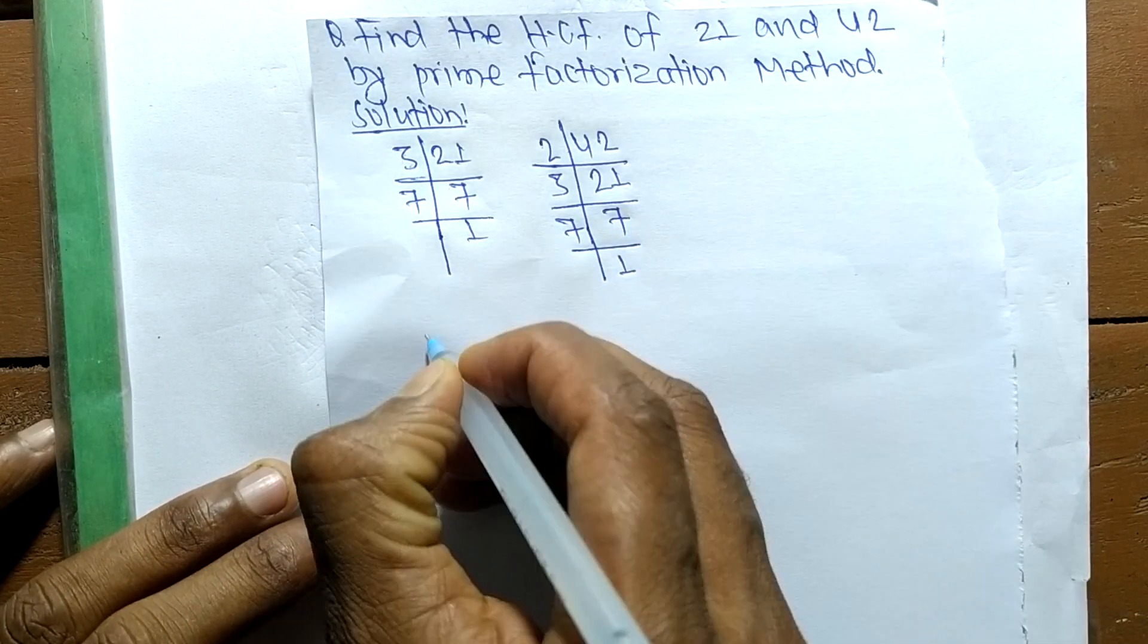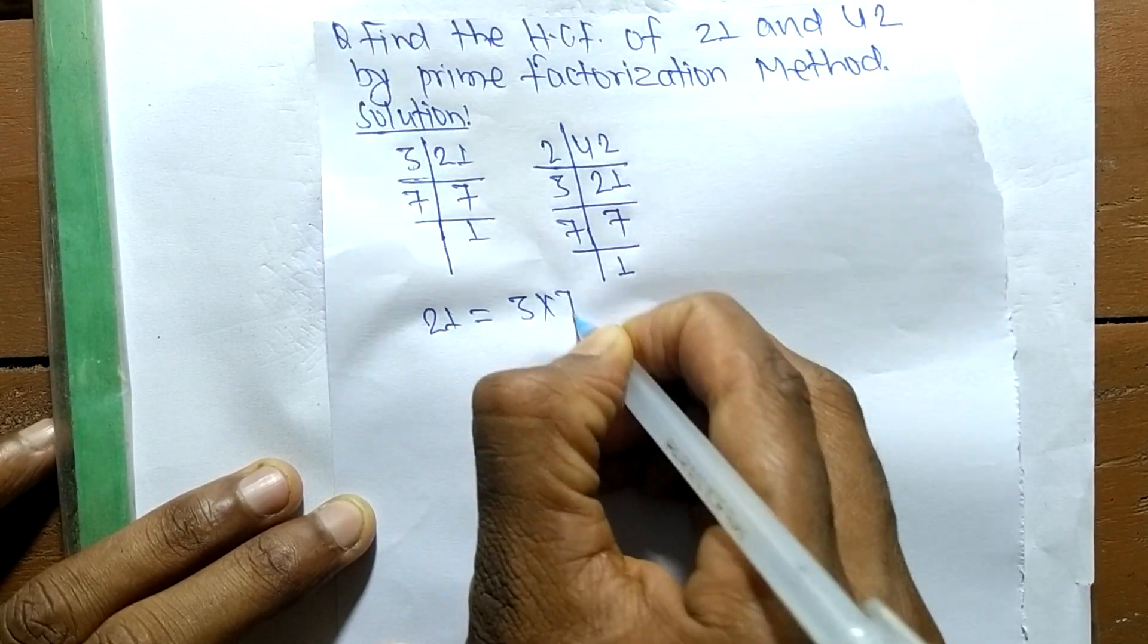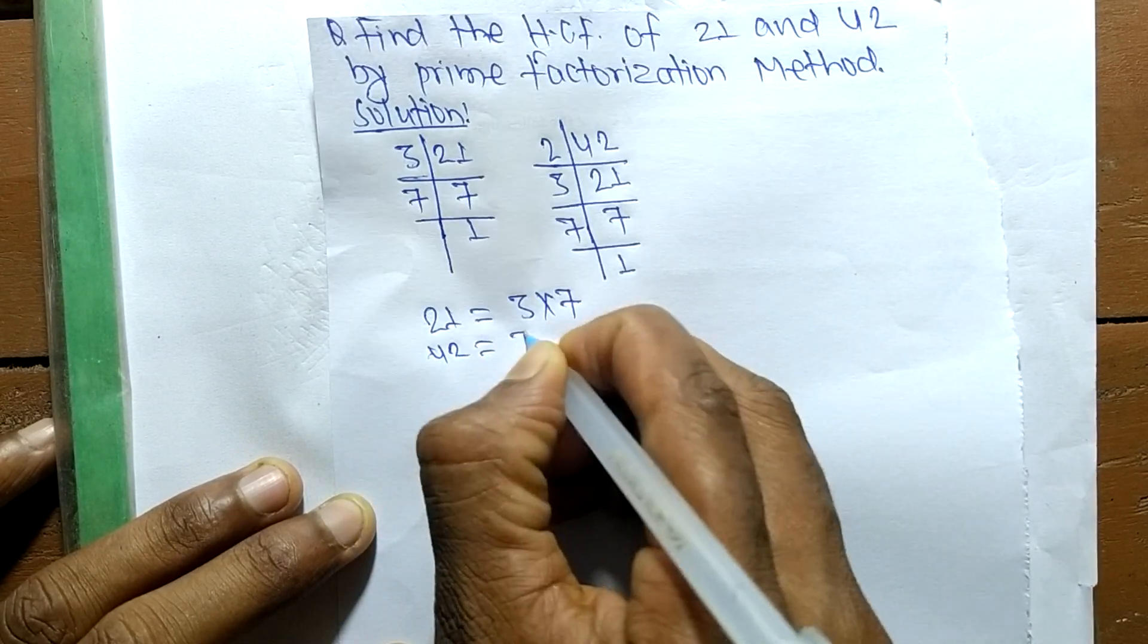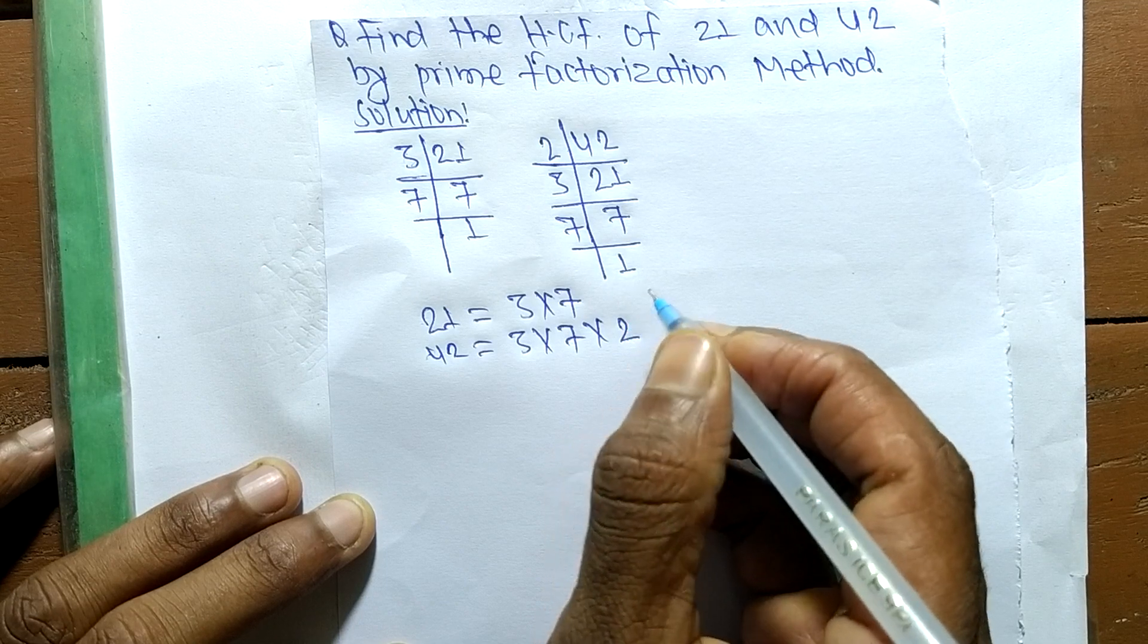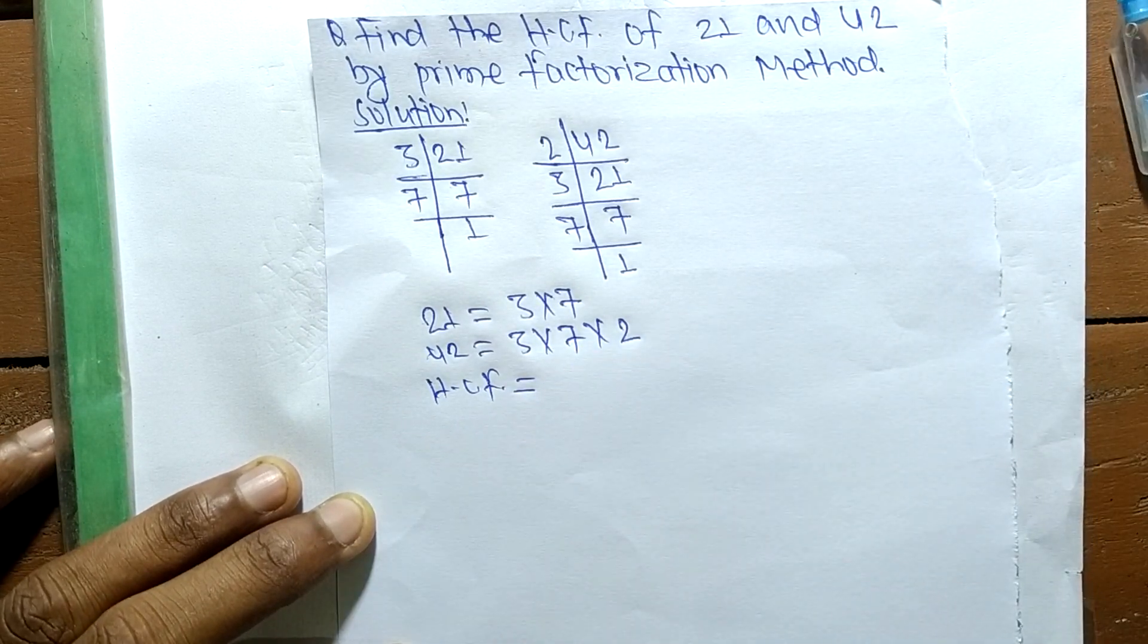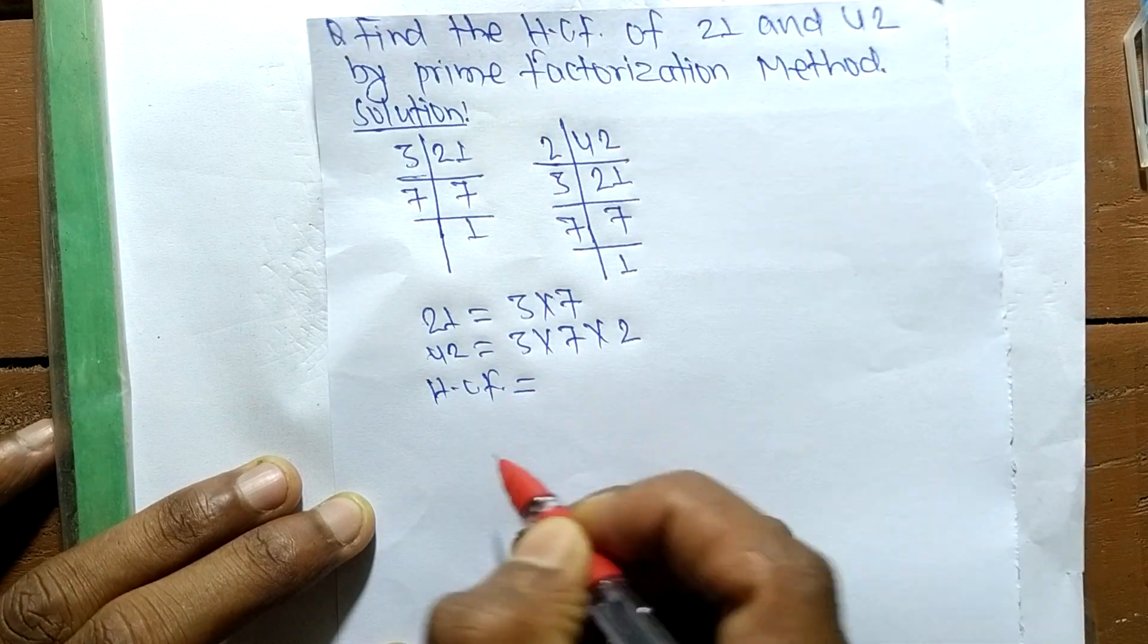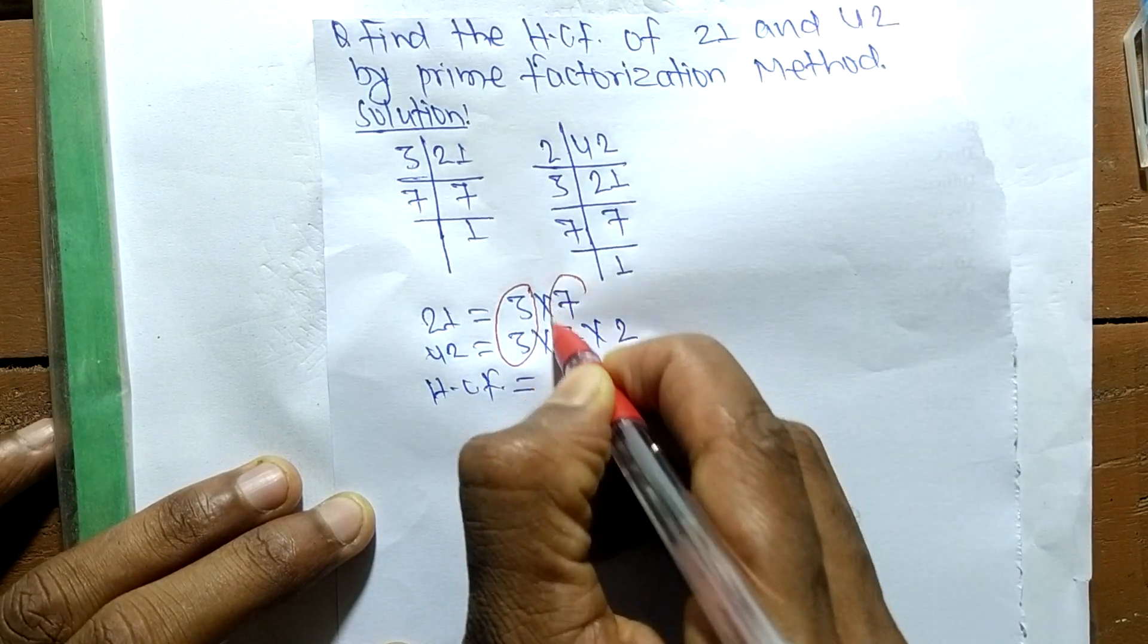From these prime factors we can write 21 is equal to 3 times 7, and 42 is equal to 3 times 7 times 2. Now to find the HCF, we have to find out the common factors in the prime factors of 21 and 42. The first common factor here is 3 and the second one is 7.